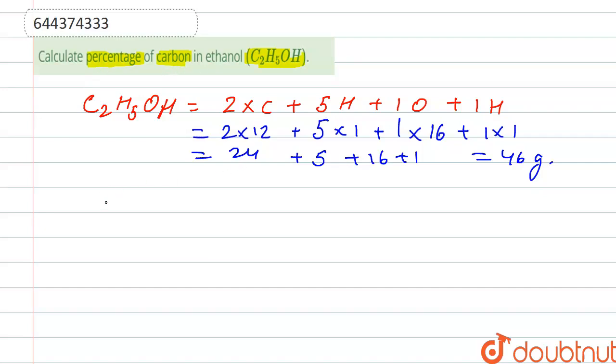Here, weight of carbon in C2H5OH is 24 grams. So percentage of carbon in C2H5OH is equal to 24 upon 46 into 100.